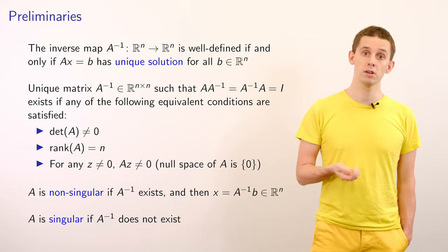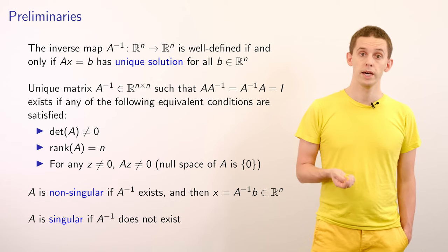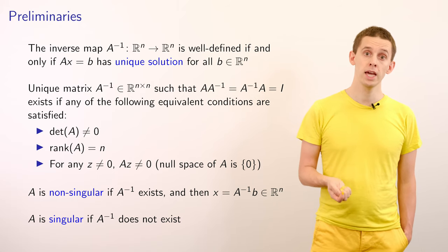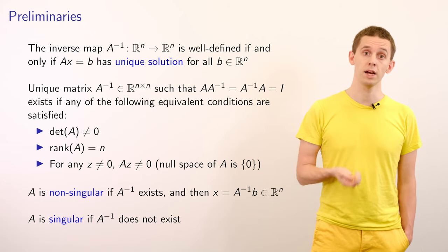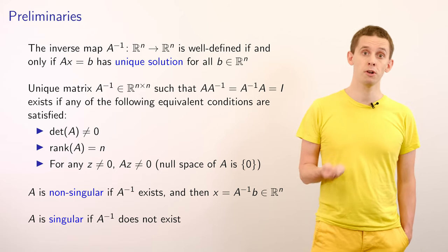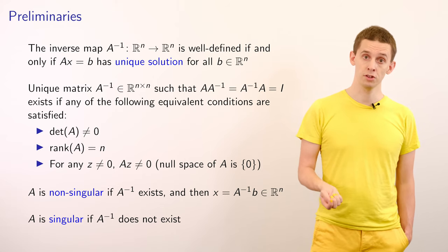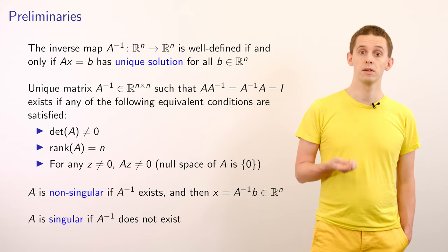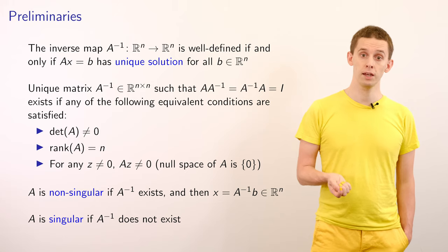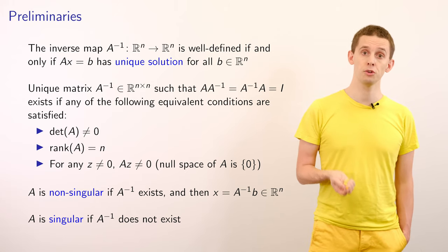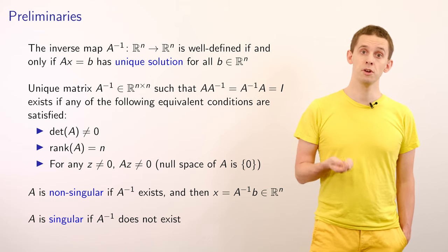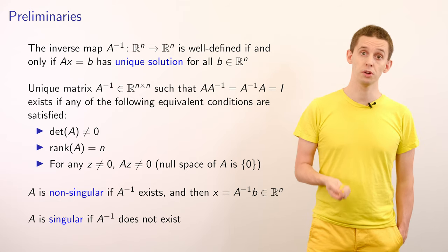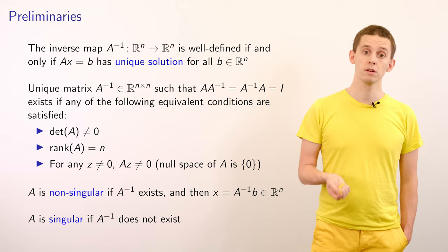We can also introduce the idea of an inverse map, A^(-1). And that will be well defined if and only if the linear system Ax = b has a unique solution for all b. And from a different viewpoint, we can introduce an inverse matrix A^(-1). And that will satisfy that A multiplied by A^(-1) = A^(-1)A = I, the identity. And that will exist if any of the following conditions are true. The determinant of A could be non-zero, the rank of A is equal to n, or that for any non-zero vector Z, AZ is non-zero. And that essentially says that the null space of the matrix A is just equal to the zero vector. And we say that A is non-singular if A^(-1) exists. And if that is the case, then we can just solve our linear system by saying that X = A^(-1)b. If A^(-1) does not exist, then we say that A is singular.